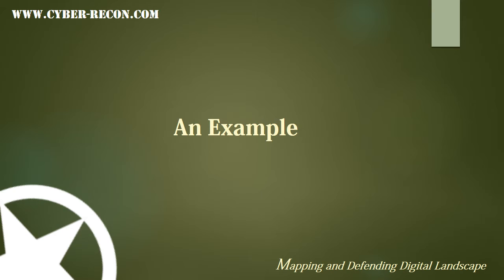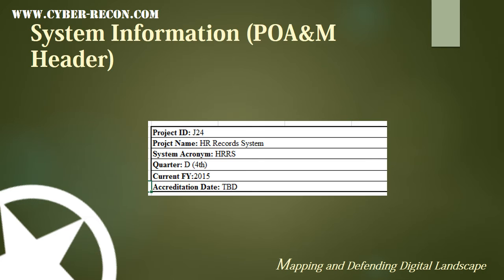In the following example, we will complete a line identifying a weakness in a system using the instructions provided by OMB. System information should be identified in the POAM header. Items include project ID, project name, the system acronym, the quarter of the POAM report, the current fiscal year, and the accreditation date. In this example, we will be looking at project ID J24, which is the HR Record System with an acronym of HRRS. The quarter is D, or the fourth quarter of the current fiscal year 2015, with an accreditation date to be determined — which means this system more than likely has not been authorized or accredited.